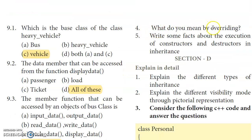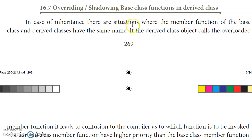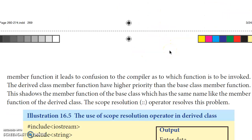Fourth question: What do you mean by overriding? As per page 269, in the case of inheritance, there are situations where a member function of the base class and the derived class have the same name. In such cases, the derived class function is given higher priority. The base class function is shadowed — that is called function overriding.